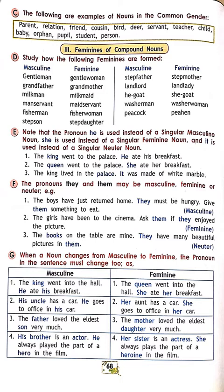Another example: 'His uncle has a car — he goes to the office in his car.' Uncle is a male noun, so we use male pronouns. If changed to aunt: 'Her aunt has a car — she goes to the office in her car.' Aunt is female, so we use female pronouns 'she' and 'her'.